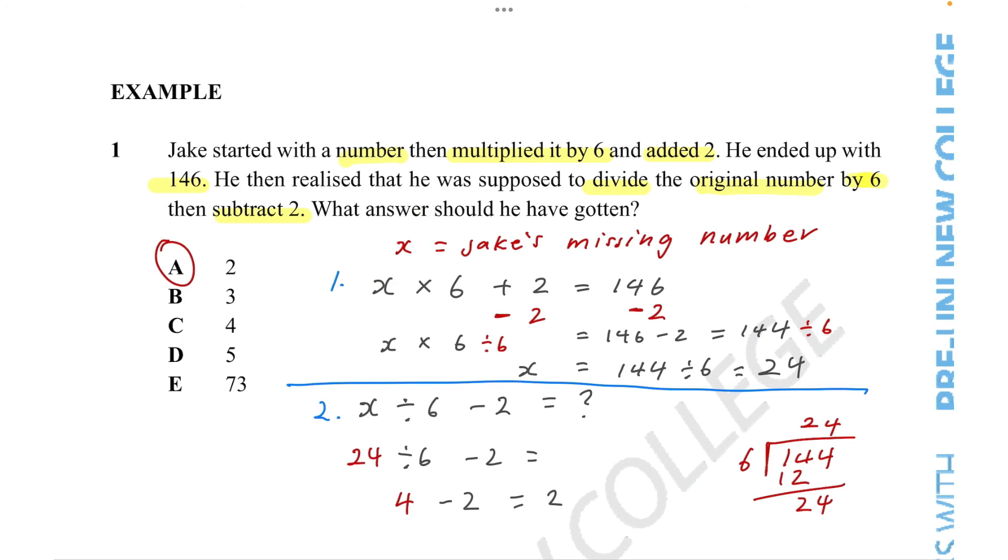Number 1, make an equation if needed and assign the missing value a letter like we did in the example we just did. Step 2, isolate the unknown value, which needs to be completely alone on one side, like here.